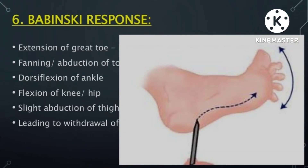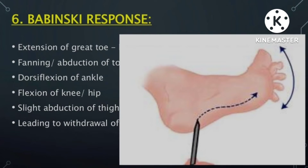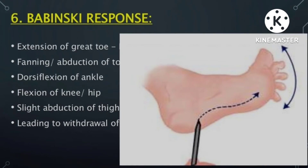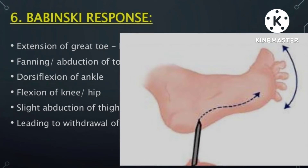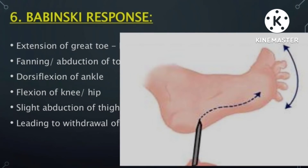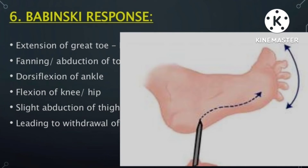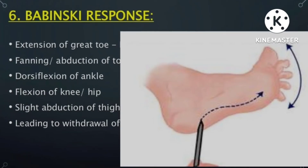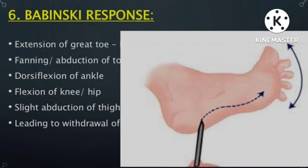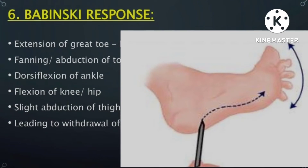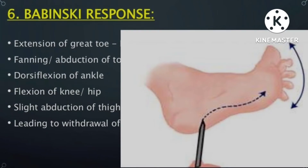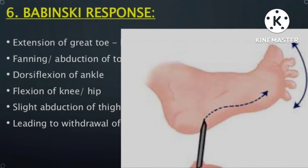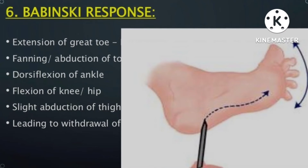The components of a positive (extensor) Babinski response are: first, extension of the great toe; second, fanning or abduction of the remaining toes; third, dorsiflexion of the ankle; fourth, flexion of the knee and hip; and fifth, slight abduction at the thigh. This whole pattern leads to withdrawal of the entire limb.